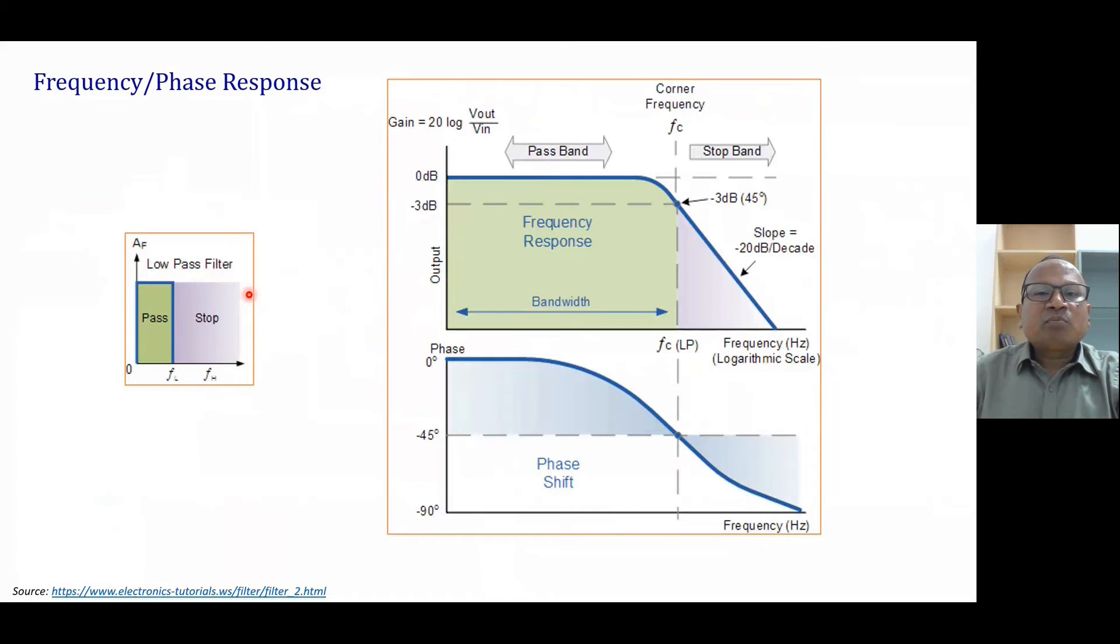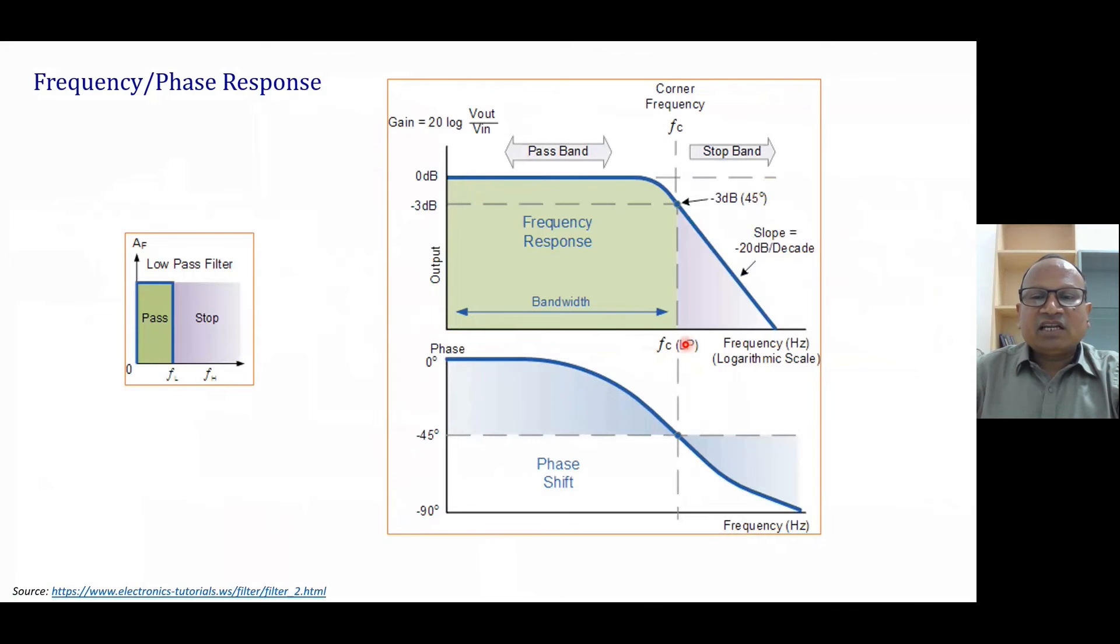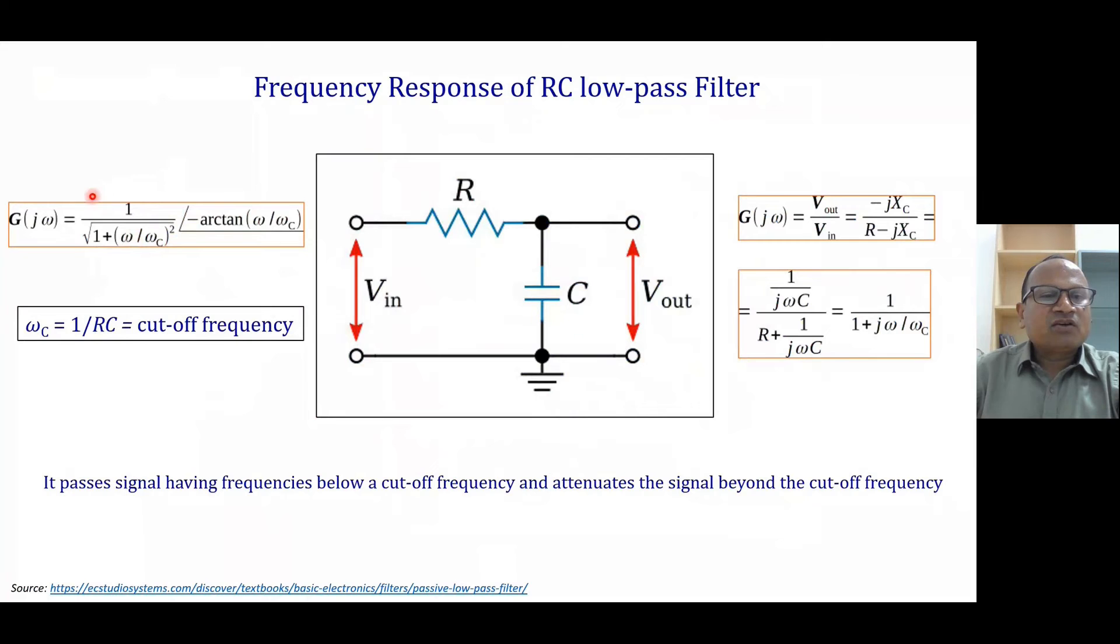But we are discussing here a practical filter. So when we plot this expression, when we put omega equals 0, that is f equals 0, the magnitude of gain will become 1. And then when we increase the f, the magnitude will reduce. So you see here that till this cutoff frequency, slowly it is reducing and at that cutoff frequency, it is down by 3 dB. So why does it happen? When we put omega equals omega C, it becomes 1 divided by square root of 2, which is 0.707.